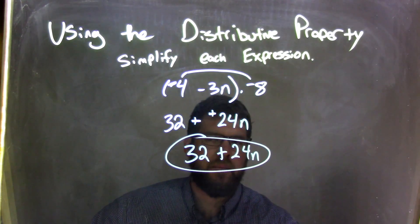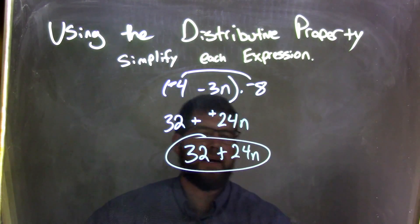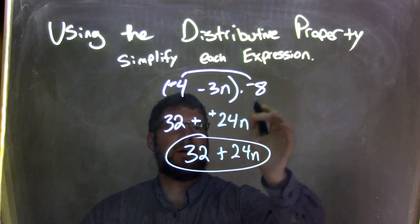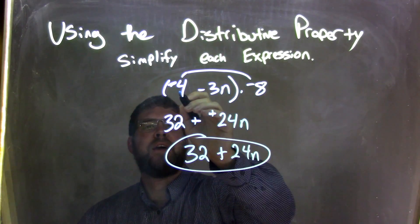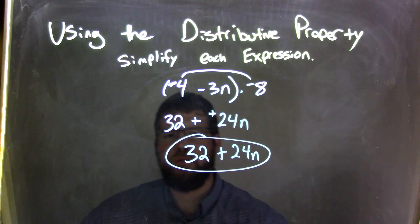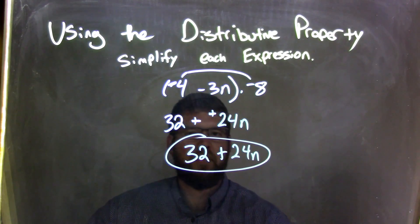They're not like terms, so we can't combine them. Let's recap. We couldn't combine anything inside the parentheses because they're not like terms. Negative 8 times negative 4 came out to be positive 32 because two negatives make a positive in multiplication.